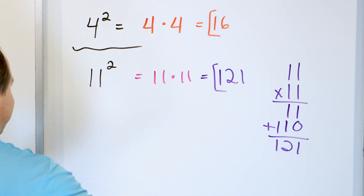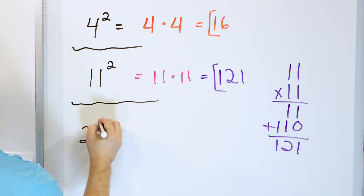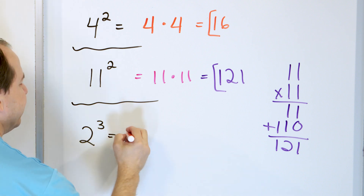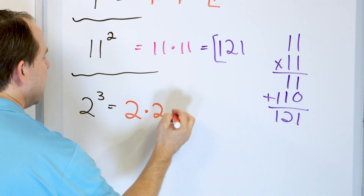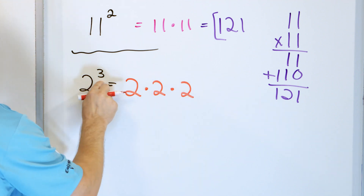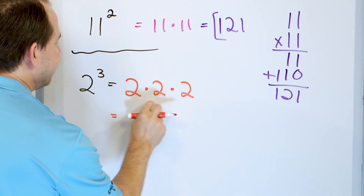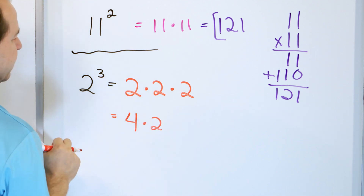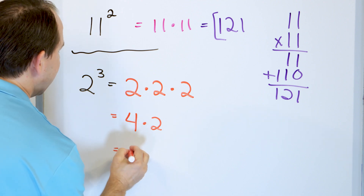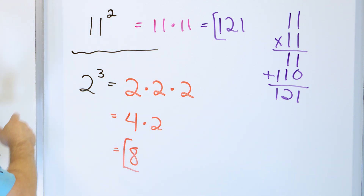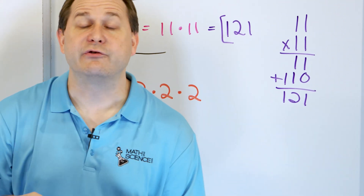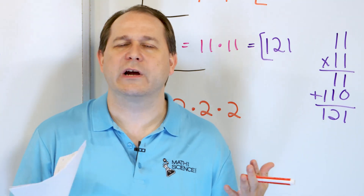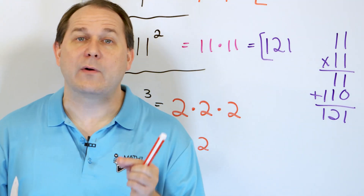Now here's our very last problem: 2 to the power of 3. We have the base 2 multiplied by itself — that would be 2 squared — but we have to do it one more time because it's to the power of 3. Multiply left to right: 2 times 2 is 4, still have to multiply by this 2, and 4 times 2 is 8. So 2 to the power of 3 is 8. We've introduced the concept of exponents — an exponent is just a shortcut, a shorthand way of writing down multiplication.